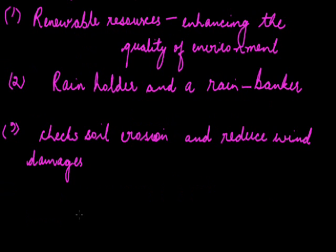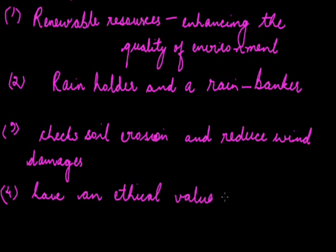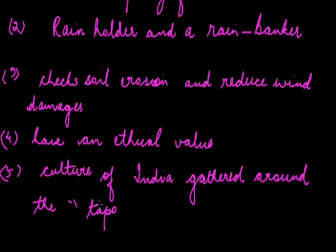Fourth, forests have an ethical value. Trees are objects of beauty. They provide fine scenery and excellent healthy air and thereby attract people as a source of recreation. Fifth, the culture of India gathered strength in the tapovan all over the country where sages lived. They modify the local climate and roots of the trees hold the soil and thus help in controlling soil erosion.